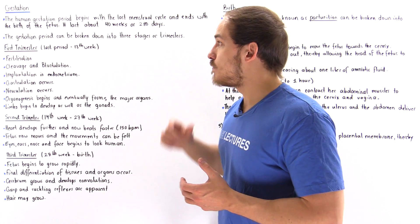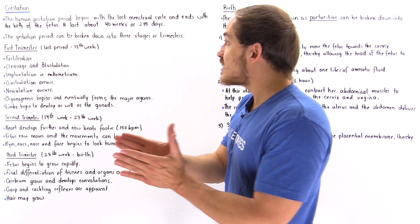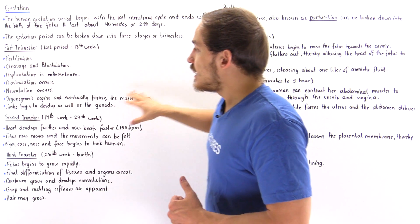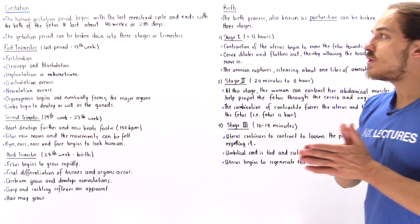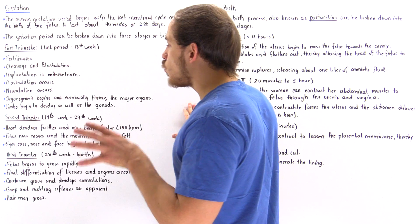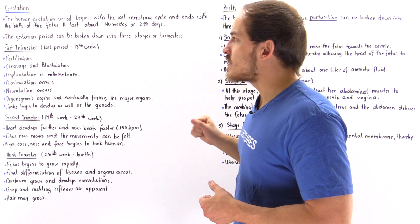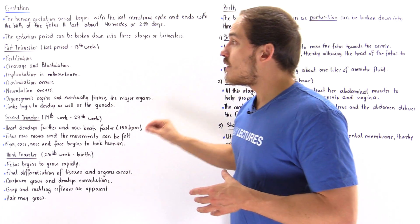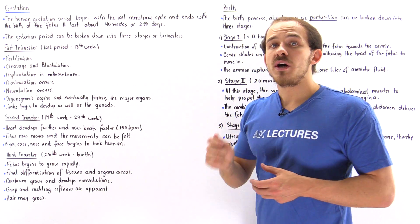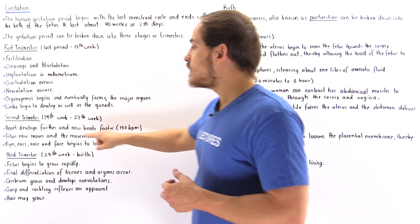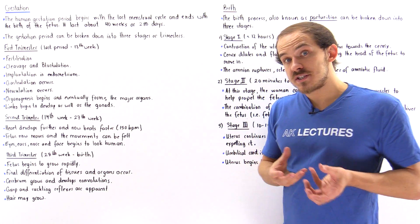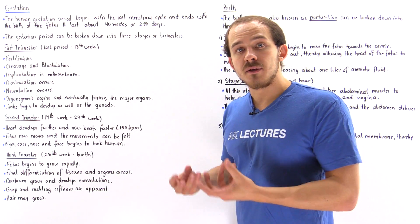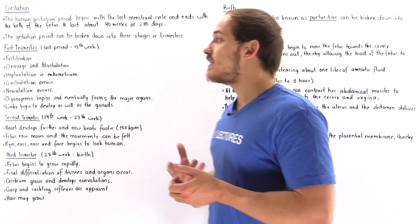The first trimester begins with the last menstrual cycle and ends at approximately the 13th week. The second trimester begins at week 14 and ends at week 27. This is when the heart develops further — in the first trimester it beats about 60 beats per minute, but in the second trimester it speeds up to about 100 beats per minute. The fetus also begins to move, and that movement can be felt by the mother. The eyes, ears, nose, and face begin to form, and the fetus begins to resemble a human being.